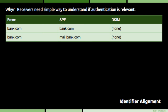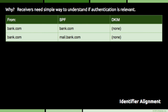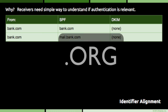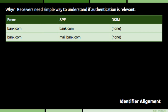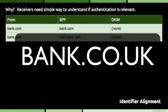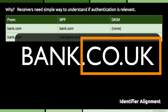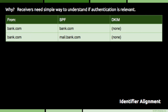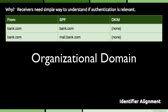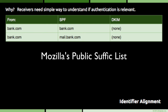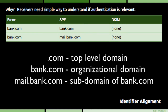In this next example, the authenticated identifier that SPF yielded is a subdomain of bank.com — mail.bank.com. To a human, the two domains are obviously related. However, there is no standard way on the internet to determine if bank.com is a top-level domain or a second-level domain. For example, with bank.co.uk, machines can't inherently tell that co.uk is the top-level domain. In DMARC, the second-level domain is called the organizational domain. By using the public suffix list maintained by the Mozilla Foundation, a receiver can determine that bank.com is the organizational domain and that mail.bank.com shares it — so this email is compliant with DMARC.